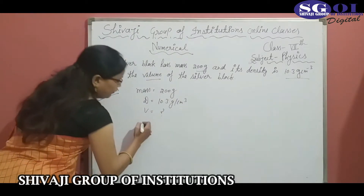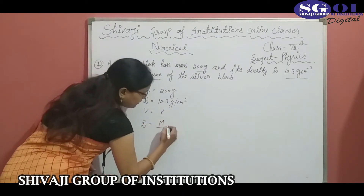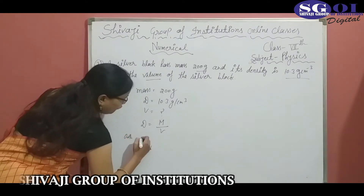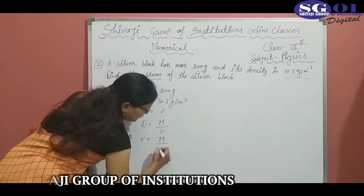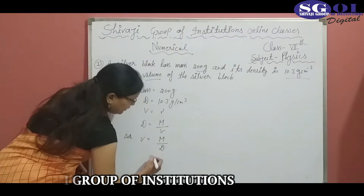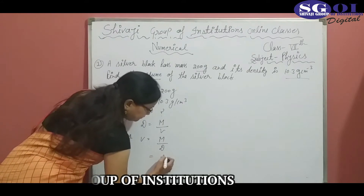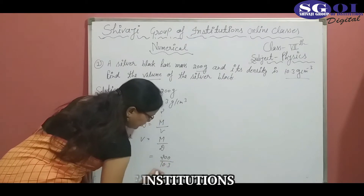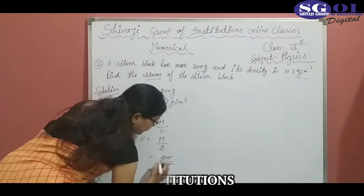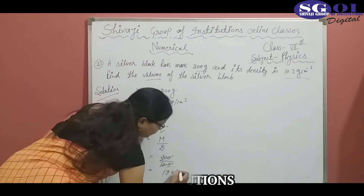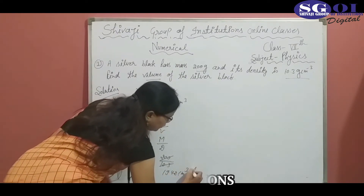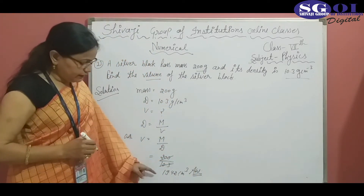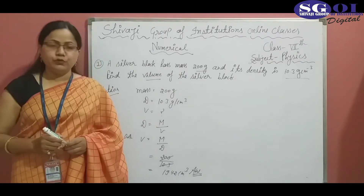The formula: density equals mass divided by volume, or volume equals mass divided by density. Here, mass is 200 and density is 10.3. After dividing, we get 19.42 cm³. So the volume of the silver block is 19.42 cm³.